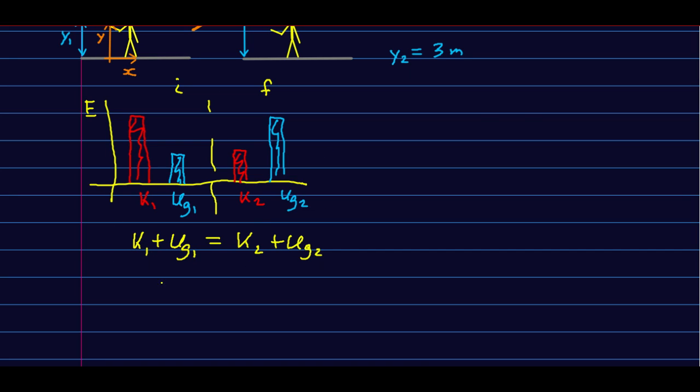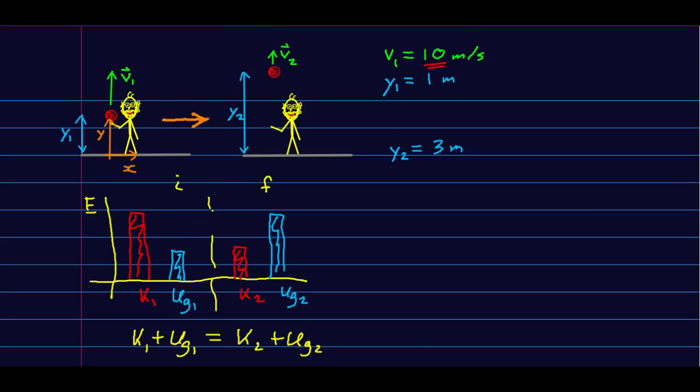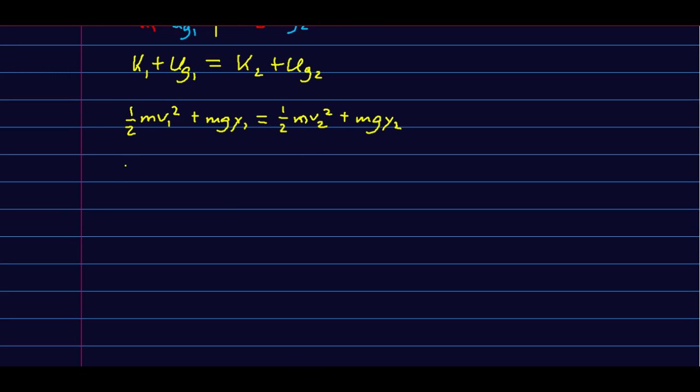We know in free fall that the kinetic energy and gravitational potential energy add up to a constant total energy, so k1 plus ug1 equals k2 plus ug2. I'm really just taking my energy bar chart and converting it into this formula. Now we can replace each of these with the formulas: half m v1 squared plus mg y1 equals half m v2 squared plus mg y2. We want v2, so I'm going to solve for that.